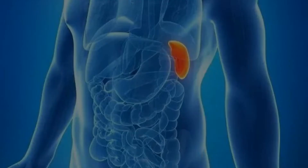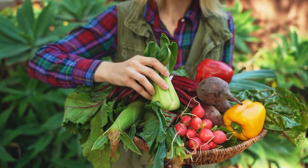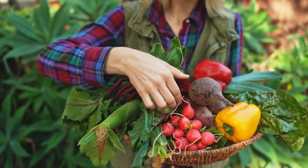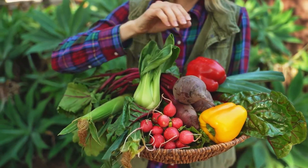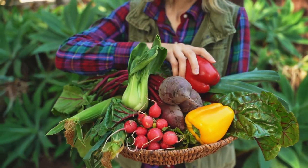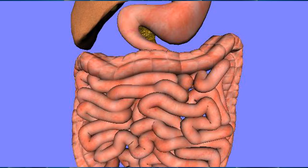The spleen represents the function of transforming and transporting food, water, and all the substances in the body. This overlaps with the digestive system, the metabolic function, and to a certain extent with the immune system.